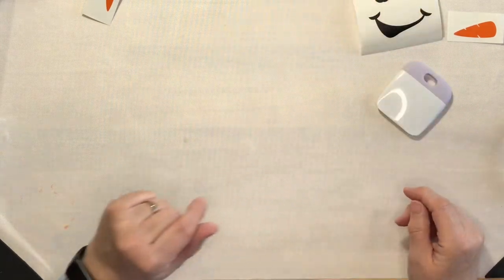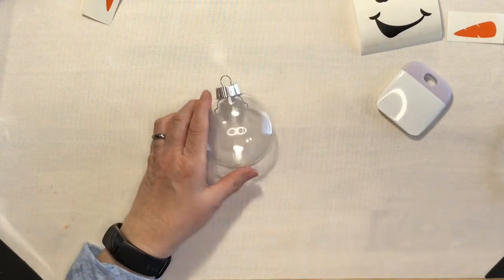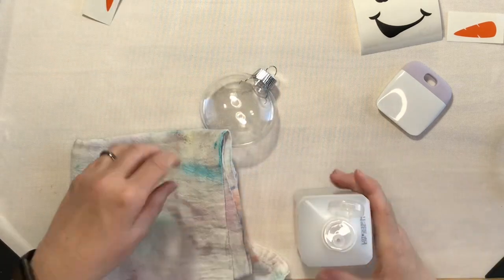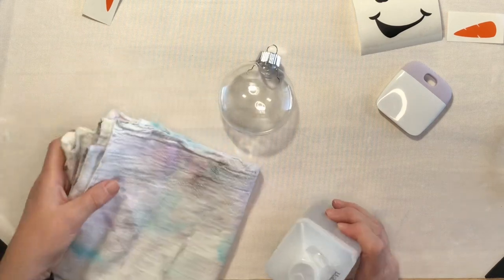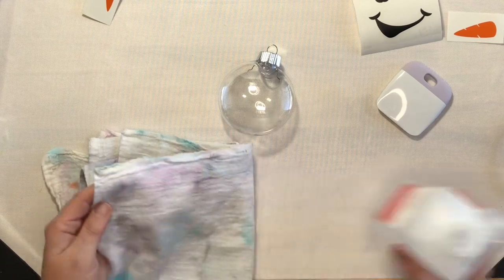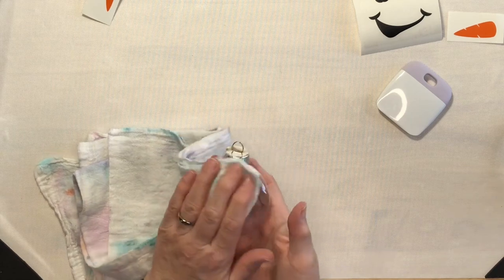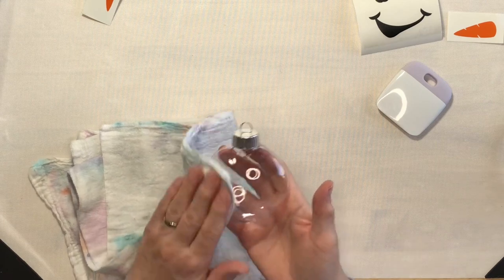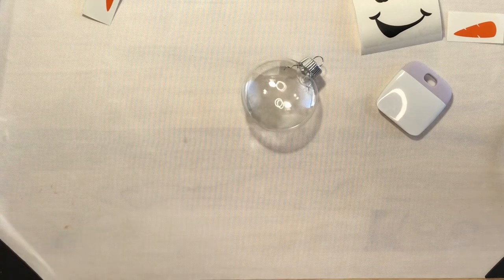All right, I'm going to set that aside for a moment. And I want to clean my ornament with some alcohol before I get too far. This is a clean rag, it is just a stained rag. I use this with all of my distress inks. So I'm just going to clean that off and then let that dry for a moment.